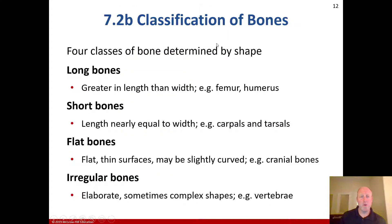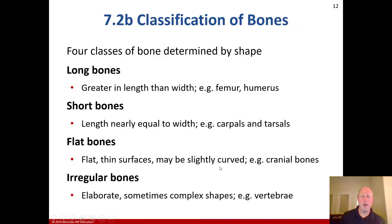As far as classification of bones, there are four classes. Long bones are greater in length than in width — the most common examples being the femur and the humerus. Short bones have length nearly equal to their width, like the carpals and tarsals. Sesamoid bones are technically short bones as well, and the most prominent is the patella, our kneecap. Flat bones have flat thin surfaces that may be slightly curved, and typically have many attachment points for tendons and connective tissue with muscle attachments.